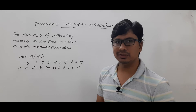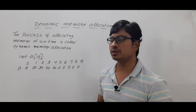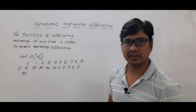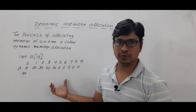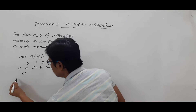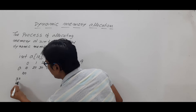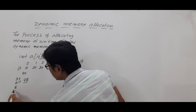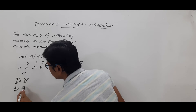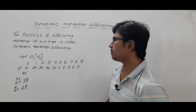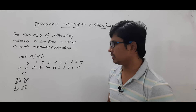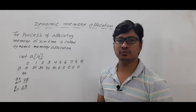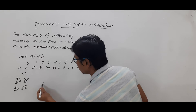Array elements are stored in contiguous memory locations. Let's say the base address is 100 and we are running this program on a 32-bit compiler. On a 32-bit compiler, one integer variable occupies 4 bytes of memory; on a 16-bit compiler it occupies 2 bytes. So 10 integer variables will occupy 10 × 4 = 40 bytes of memory.